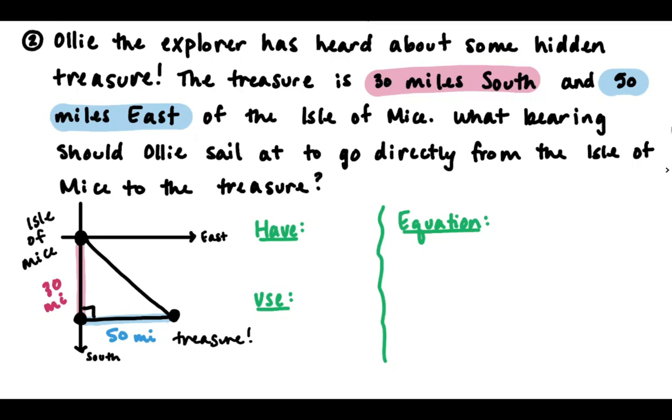And then finally, we have our question. What bearing should Ollie sail at? So remember, the bearing is measured clockwise from north. So here's where Ollie is sailing, right? Ollie's sailing that way. North is here. So our bearing is going to be this angle. So this is the angle we want.